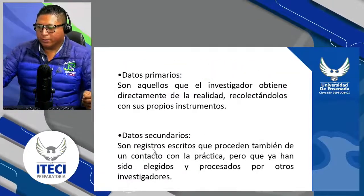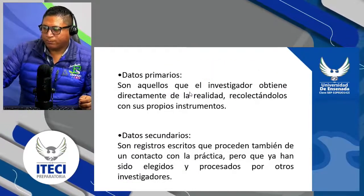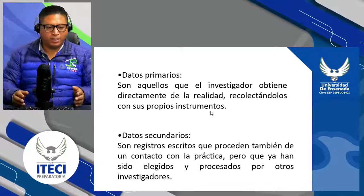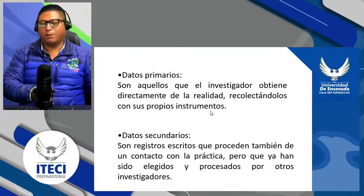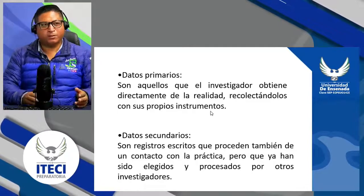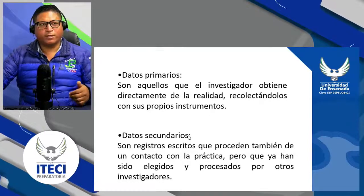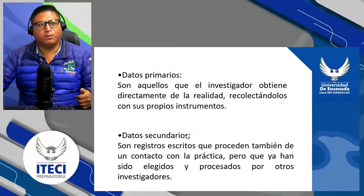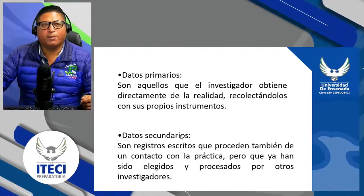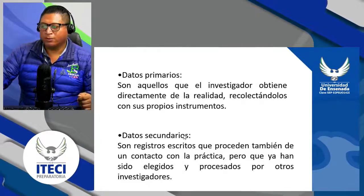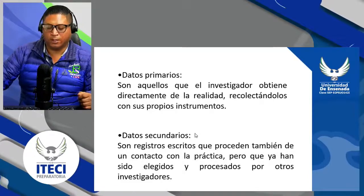Los datos primarios son aquellos que el investigador obtiene directamente de la realidad, recolectándolos con sus propios instrumentos; es decir, todos los antecedentes que tenemos o vamos a tener del tema van a ser los datos primarios. Los datos secundarios son registros escritos que proceden también de un contacto con la práctica, pero que ya han sido elegidos y procesados por otro investigador — esos van a ser los datos secundarios.